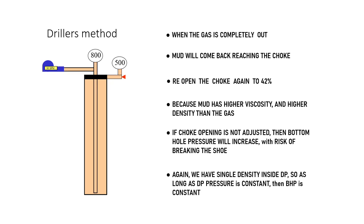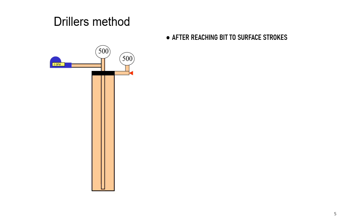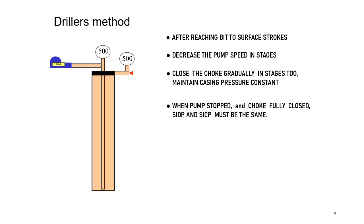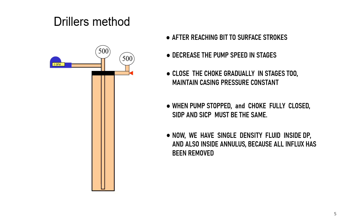So reopen the choke and maintain drill pipe pressure constant. After reaching bit-to-surface strokes, slow down the pump in stages and close the choke gradually, maintaining casing pressure constant. After the pump stops and the choke is completely closed, check pressures. Both casing and drill pipe pressures must be the same, since now we only have mud inside the drill pipe and inside the annulus. If casing pressure is still higher than drill pipe pressure, then we still have influx in the annulus.